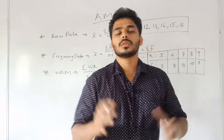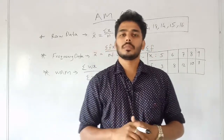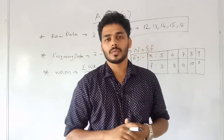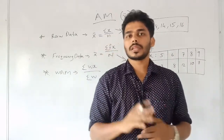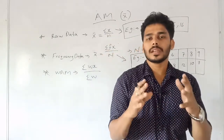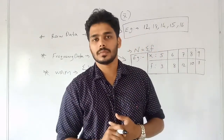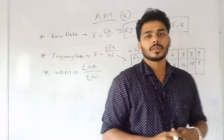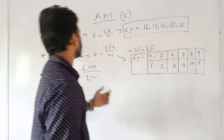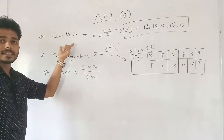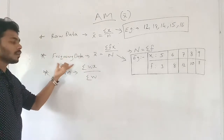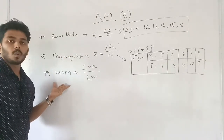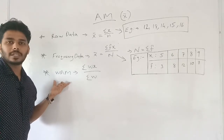Now, we have discussed what is arithmetic mean. In arithmetic mean, we have mainly three equations. The first one is raw data, then frequency data, then WAM — that means weighted arithmetic mean.